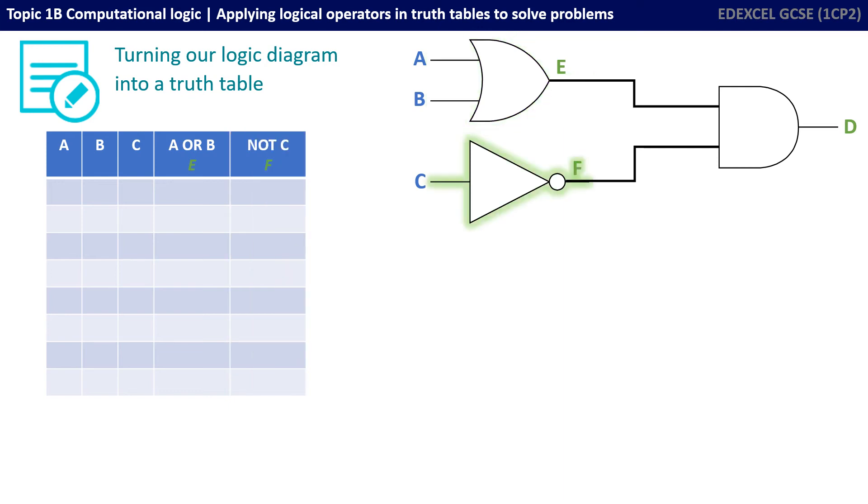In a similar way, we have the output of NOT C and we're going to call that F, which becomes the other input to our AND gate.